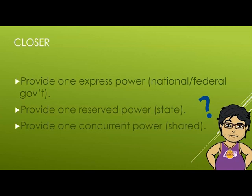Your closer for this lesson is to provide one example of an express power at the national and federal level, one reserve power at the state level, and one concurrent power. For the state level, think about the difference in minimum wage in different areas. For concurrent powers, think about labor laws — could you work more than eight hours in one state but not another? And for express powers, think about the making of currency — can a state print its own money?